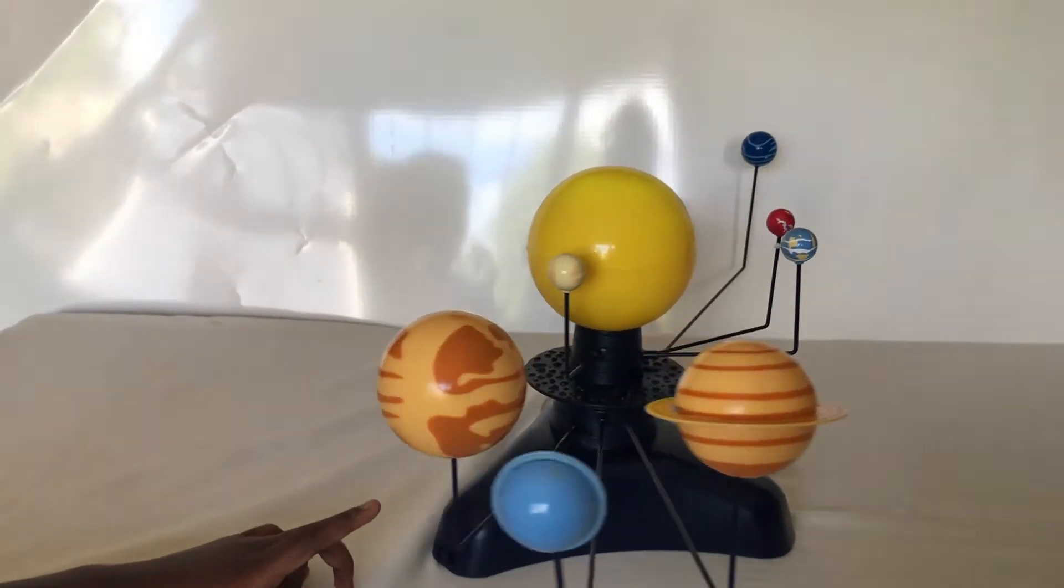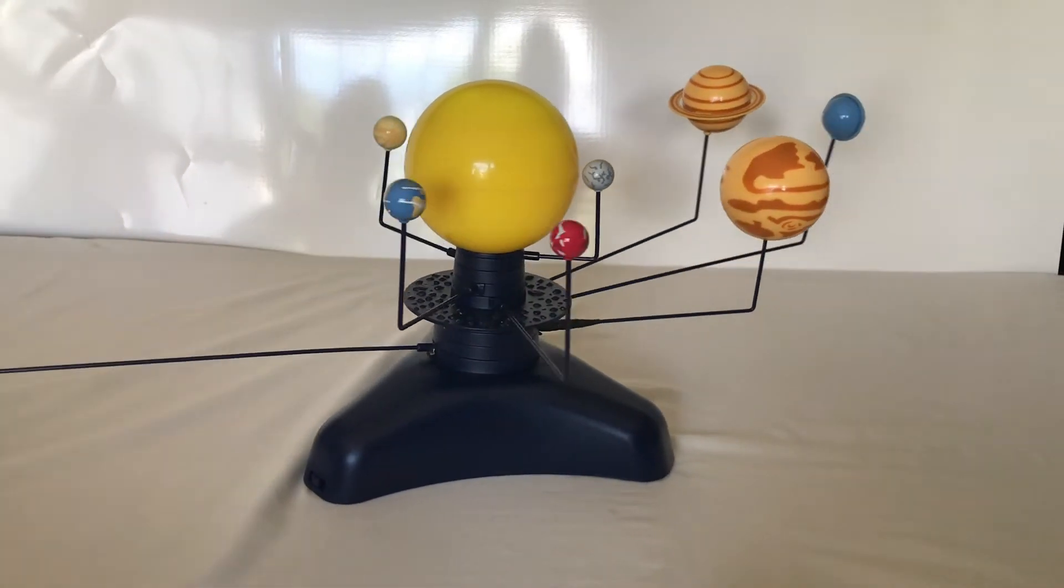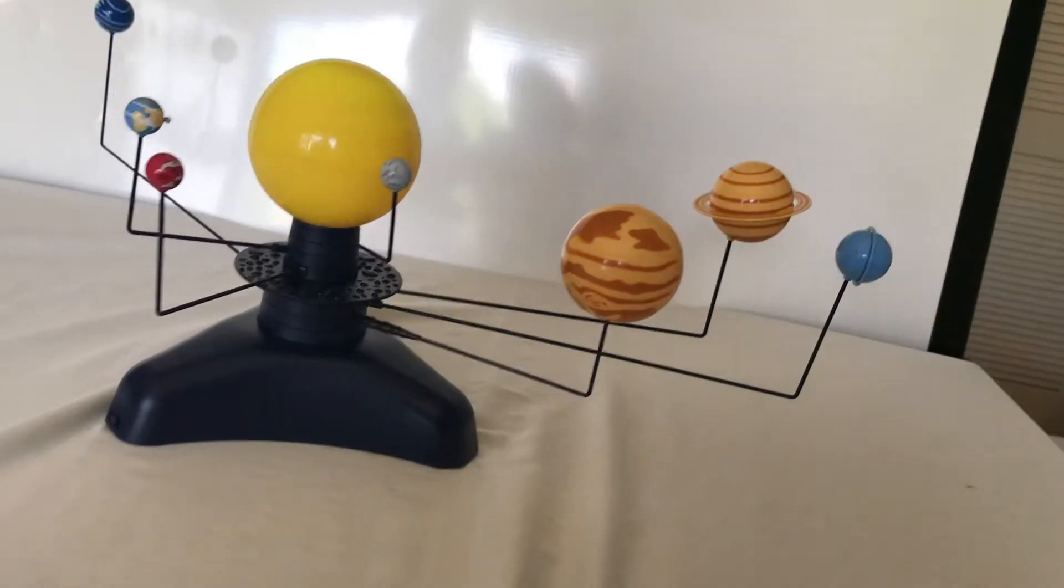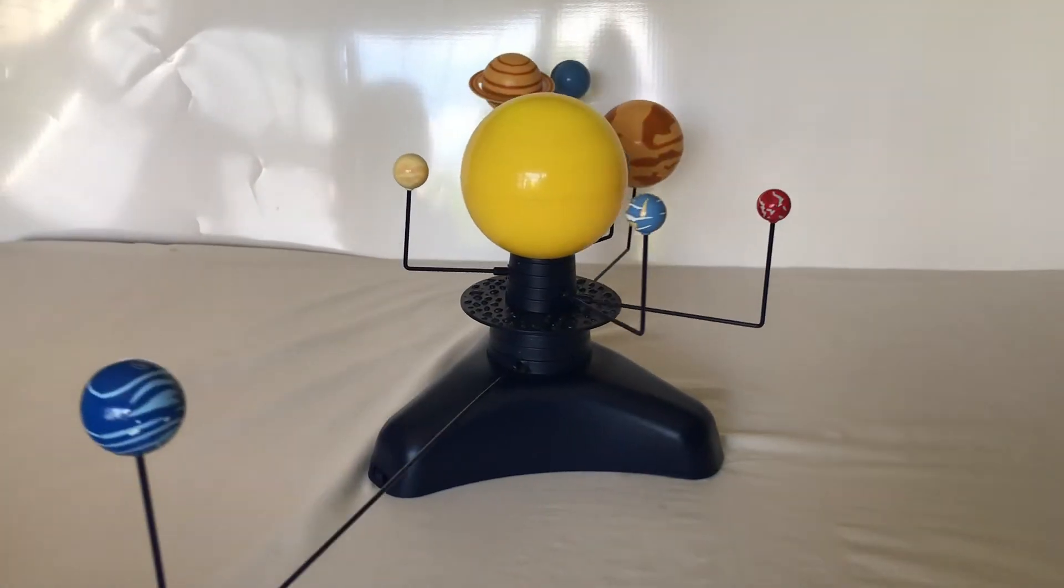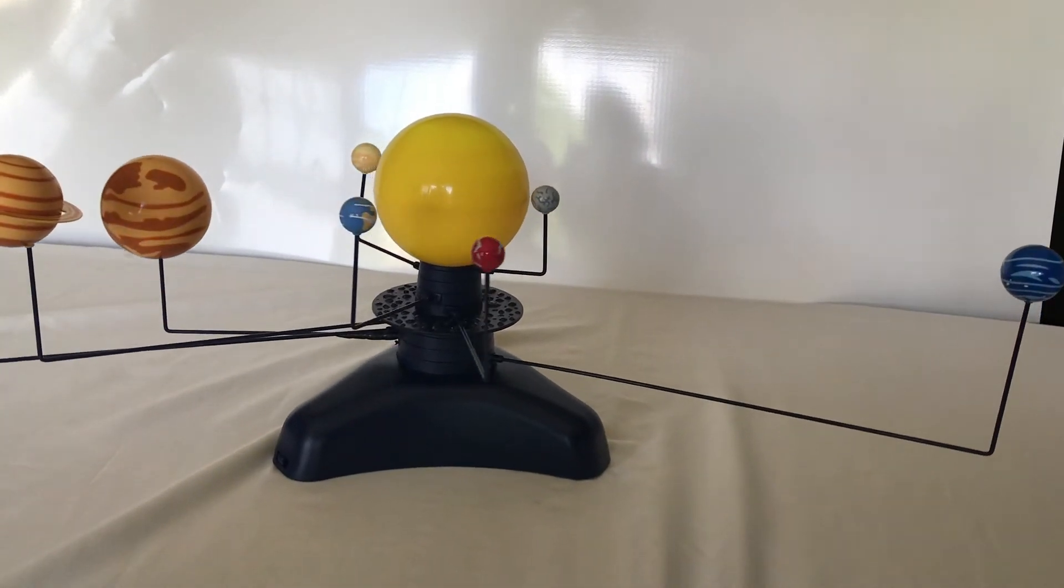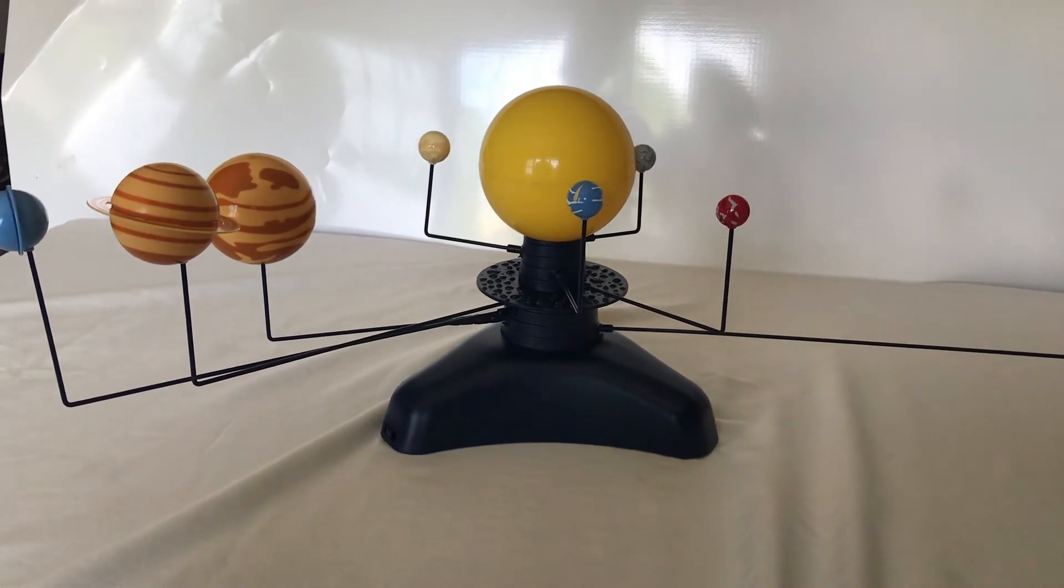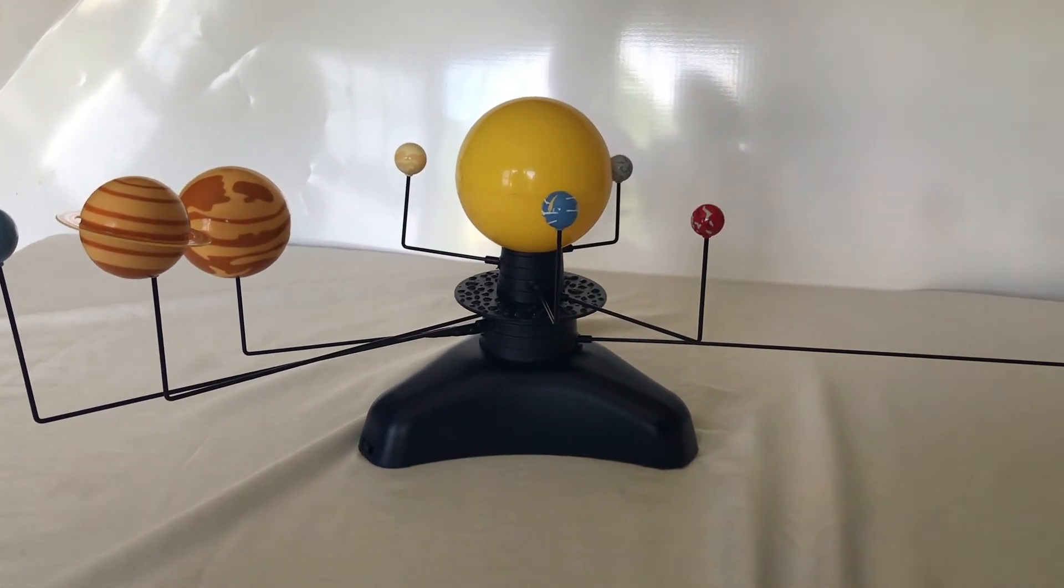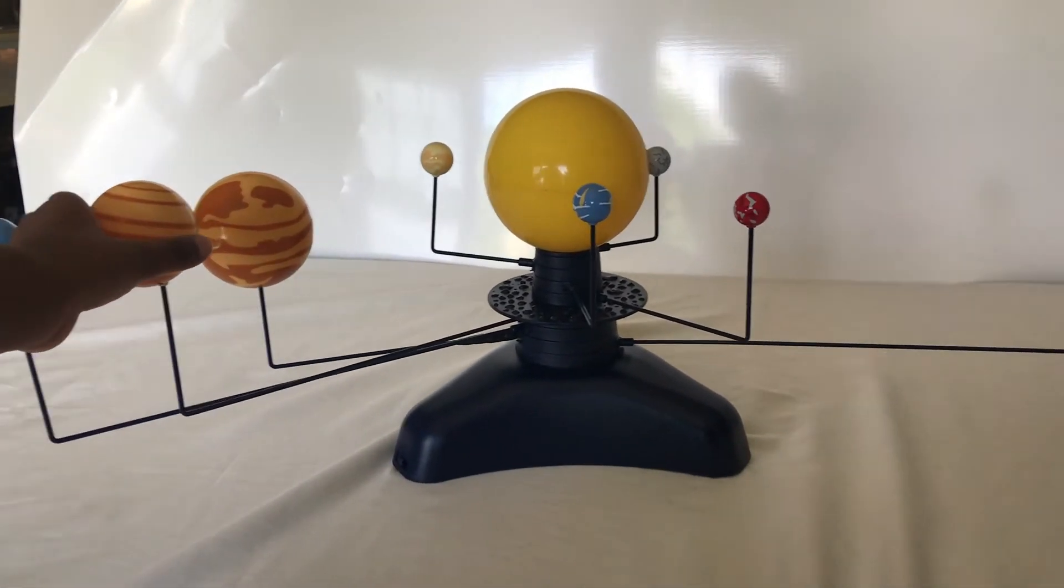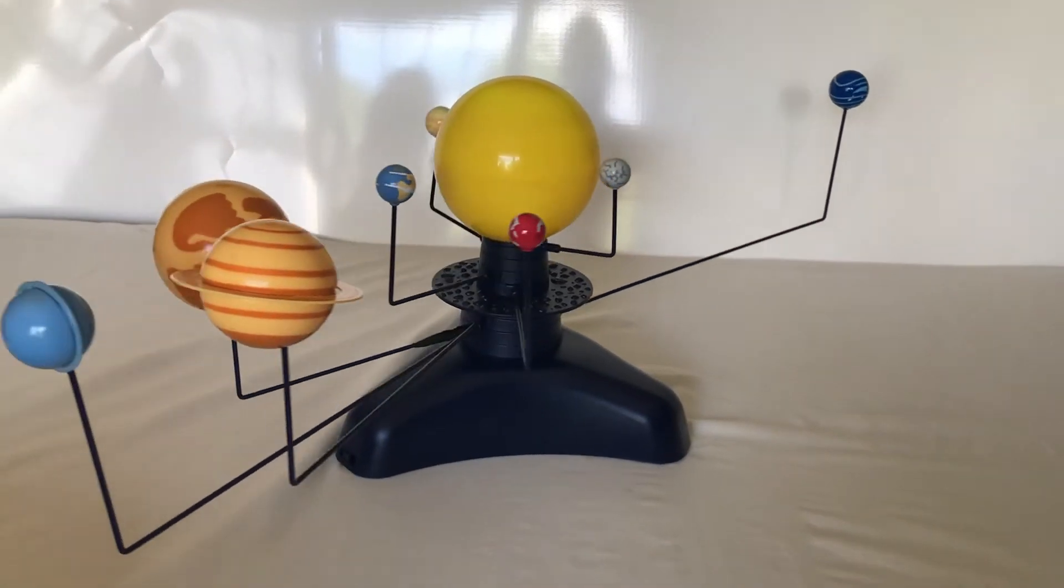Our other planet, our other gas giant, the second biggest gas giant, is Saturn with the beautiful rings. Saturn has 62 moons, and Titan is the largest moon. Saturn's rings have ice and rocks.